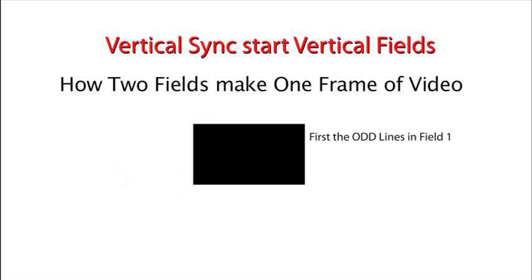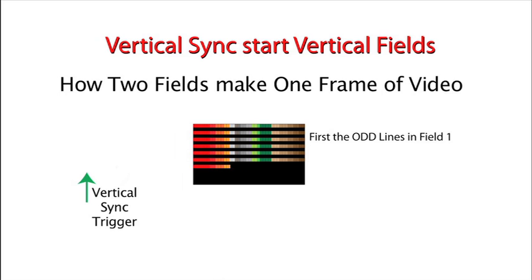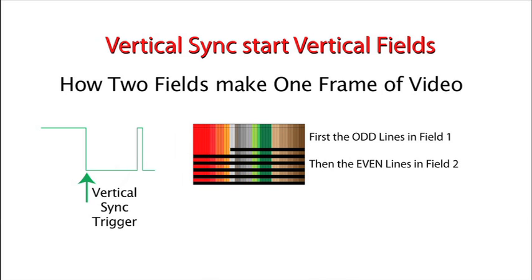As stated before, frames are broken into two fields, and each field carries one half the lines. The first field begins at the top of the screen displaying all of the odd lines. When the second field begins, it shows all the even lines. Combined, they display an entire frame of video.